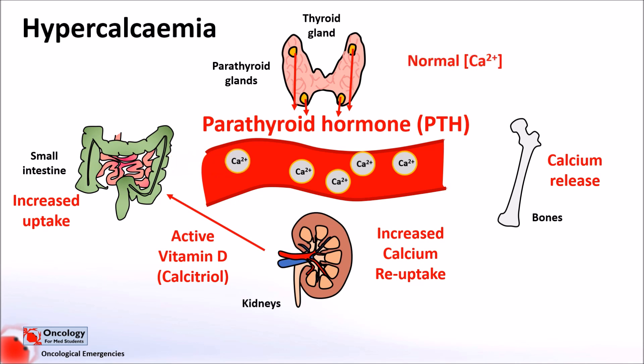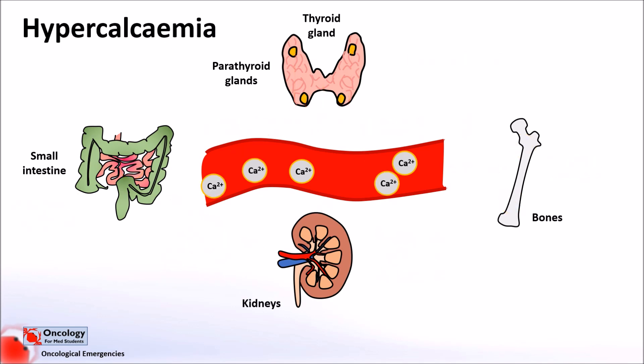This system of interaction between the thyroid gland, parathyroid glands, calcitonin and parathyroid hormone ensures that calcium remains within the normal range, allowing for the normal continuation of physiological processes. Hypercalcaemia develops in 20–30% of people with cancer, and is often referred to as hypercalcaemia of malignancy to distinguish it from other causes. Unfortunately, it usually signifies a poor prognosis.